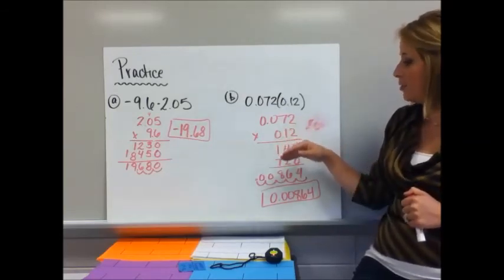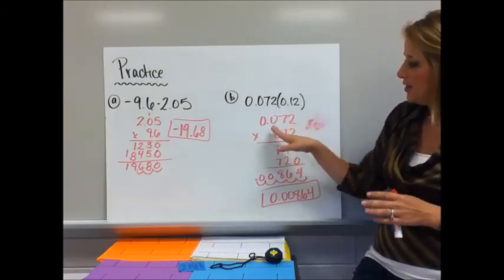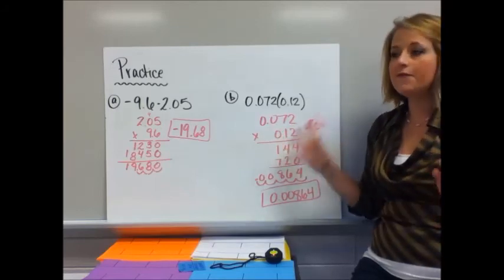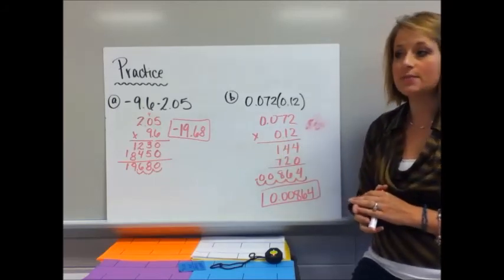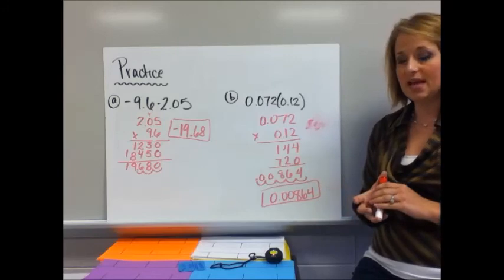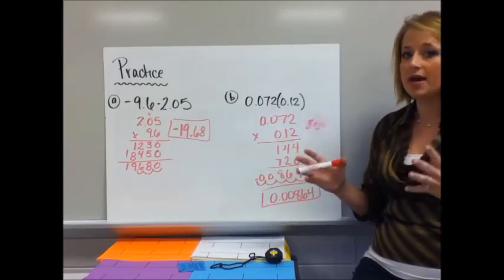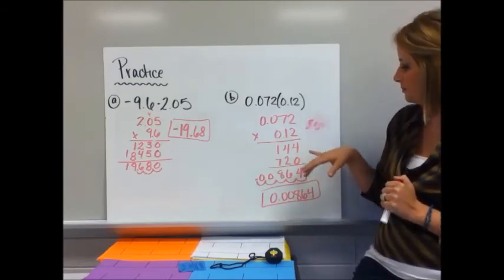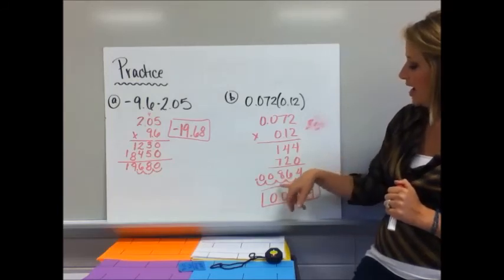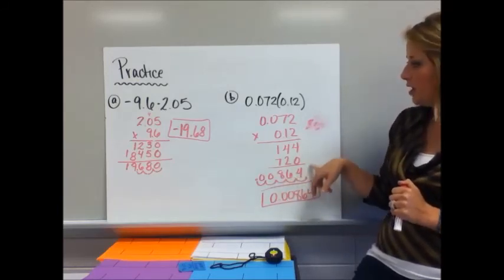With practice B, stack my numbers and you can see that I'm not lining up the decimals. If for some reason you did line up the decimals, you would still come up with the same answer but you're going to have lots of extra zeros that you have to deal with. Multiply it out, I got 864.